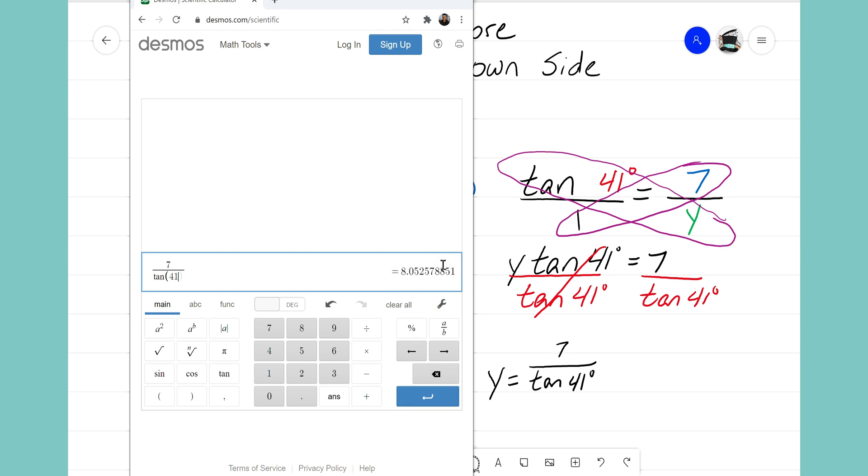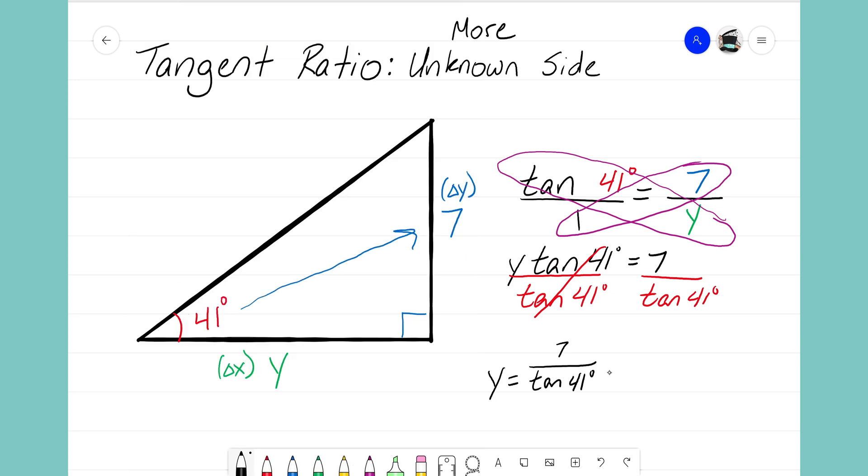And out with my output I see that Y is going to equal 8.05. The 5 makes the 2 round to a 3, so 8.053. So I now know that that missing side has a value of 8.053. That is the missing side of my right triangle.